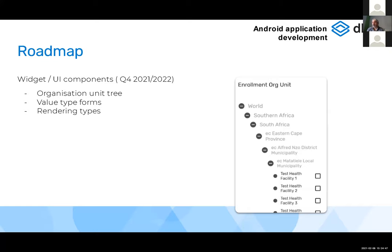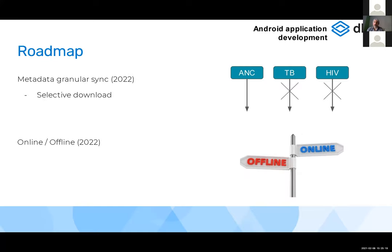Widget UI components are also in the roadmap — separating all widgets and UI components into a reusable module so other Android custom applications can share the same look and feel, such as the org unit tree, data element types, attribute types, and rendering types like checkboxes and radio buttons. Metadata granular sync — controlling which metadata to download per area — is planned for 2022.